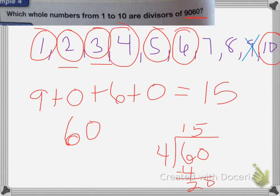It cannot be divided by 7. Sometimes you just have to check to see if it can. And it cannot be divided by 8 because the last 3 digits, 060, is not divisible by 8. So your answer is 1, 2, 3, 4, 5, 6, and 10.